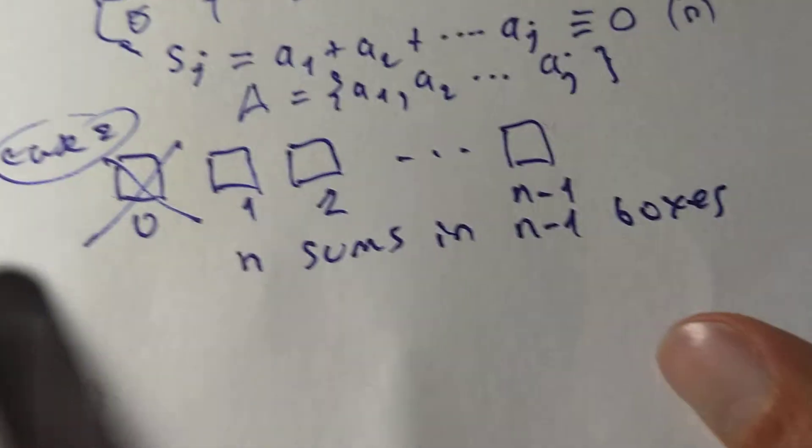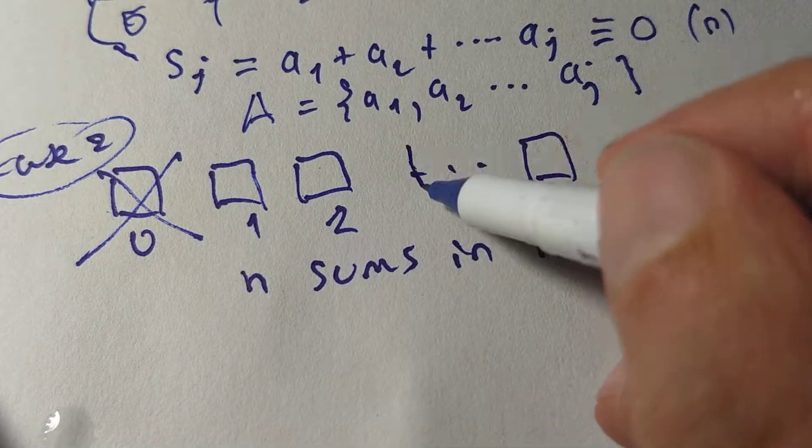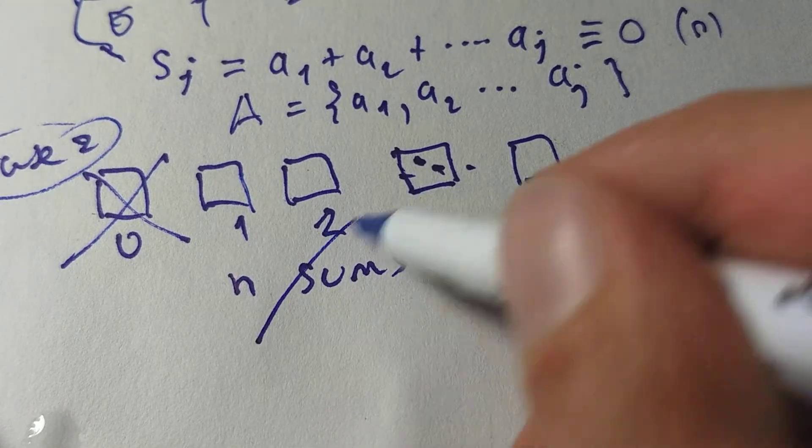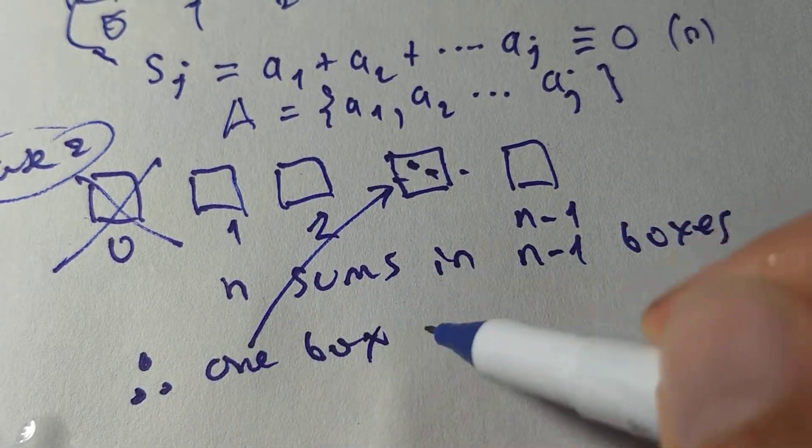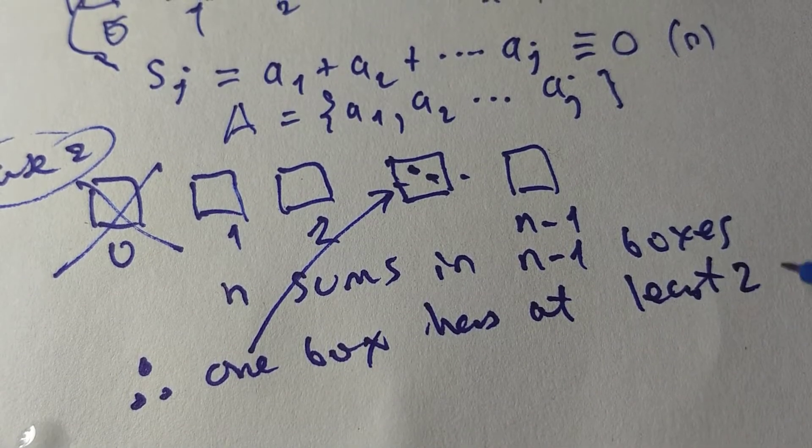Now, by Dirichlet's principle, well, what do you think is going to happen here? Obviously, one box somewhere is going to have two sums in it. So, therefore, one box has at least two sums.